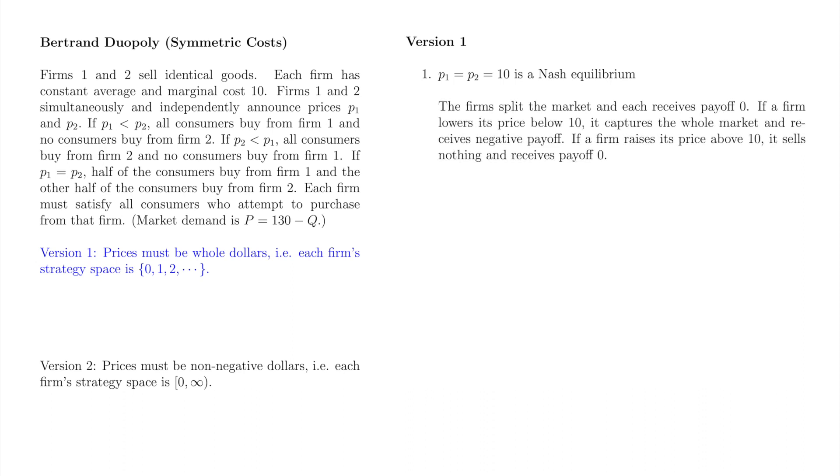We'll check that neither firm has a profitable deviation, so these prices form a Nash equilibrium. If a firm raises its price, its profit is still zero, since it is now the higher-priced firm, and therefore no consumers buy its goods. On the other hand, if a firm lowers its price, it now makes negative profit, since it now loses money on each unit it sells, and the consumers come flooding through the door because it is the lower-priced firm.